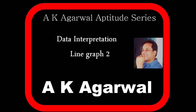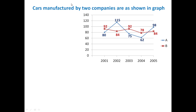Hello friends and welcome to AK Agarwal Aptitude Series. In this session we are going to learn a technique for solving a problem of data interpretation using a line graph. A line graph is given which indicates cars manufactured by two different companies, A and B. This graph shows cars manufactured by company A, and this shows cars manufactured by company B.